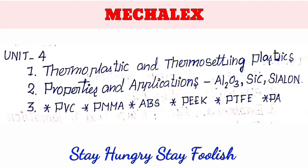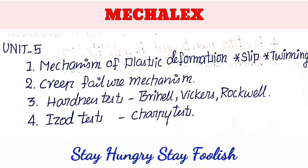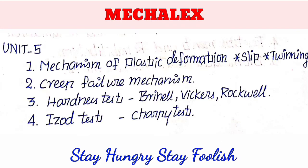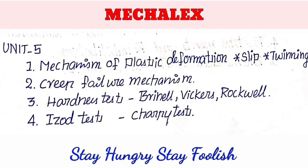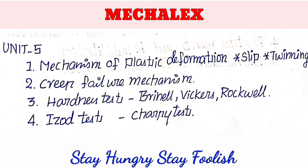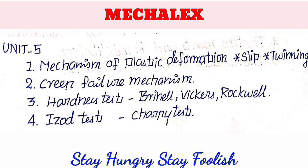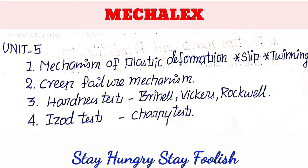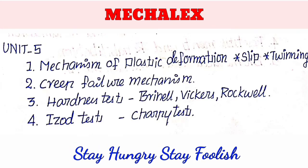This includes an explanation plus properties and applications of AL2O3. The first mechanism is plastic deformation — we have two mechanisms: slipping and twinning. The second is the creep failure mechanism. There is a drawing and introduction — the principle is the failure mechanism.